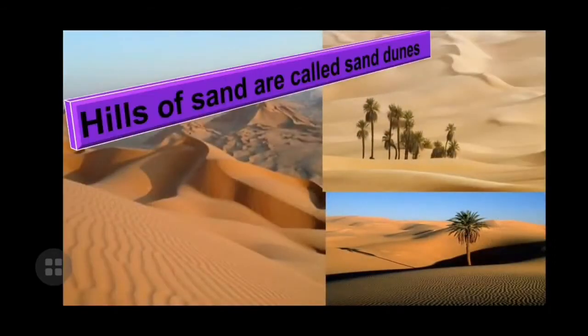Another feature is that hills of sand are called sand dunes. When you visit any sandy area like Rajasthan or any desert region, you will see that there are lots of hills made up of sand — those are known as sand dunes.